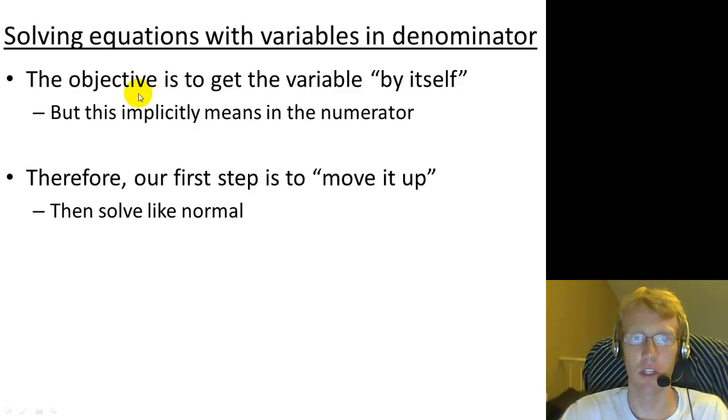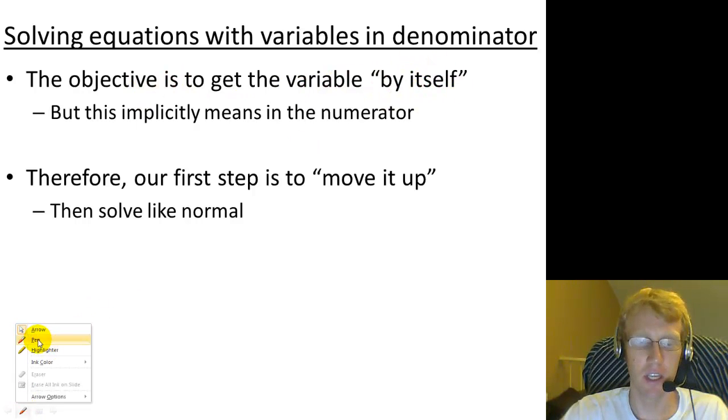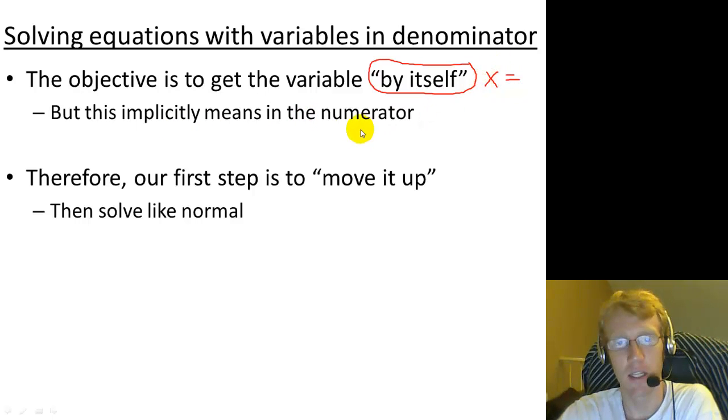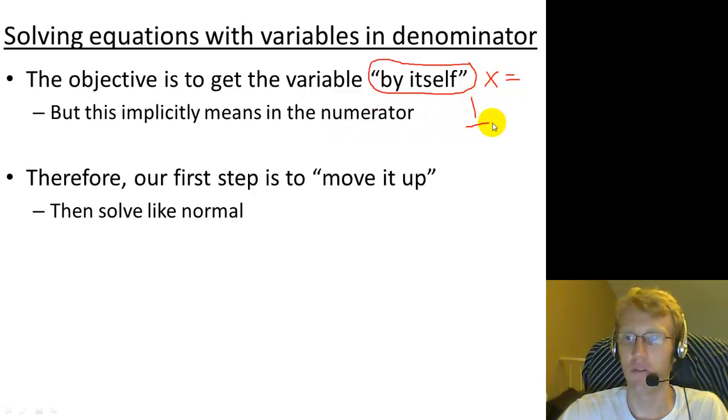Anytime you're solving an equation, the objective is always to get whatever that variable is by itself. In this case, the variable you're trying to get by itself starts off in the denominator. But when we say that a variable is by itself or solved for, we mean like x equals and then whatever we got. This implicitly means that the variable is in the numerator. If you have 1 over x equals some stuff, then it's not yet finished solving because your variable is in the denominator. We automatically always mean that the variable needs to be in the numerator.